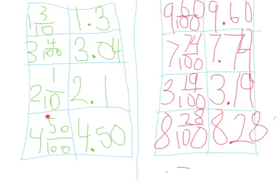4 and 50 hundredths in fraction notation is on the left, and 4 and 50 hundredths in decimal notation is on the right. On the left is 7 and 74 hundredths in fraction notation, and on the right is 7 and 74 hundredths in decimal notation.